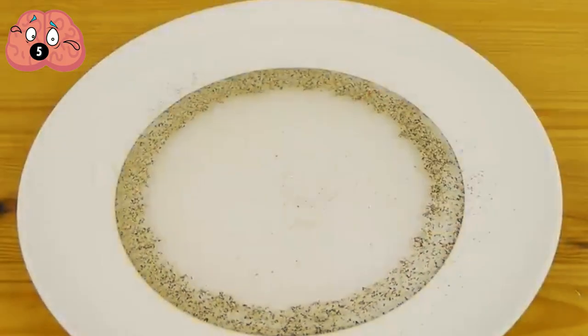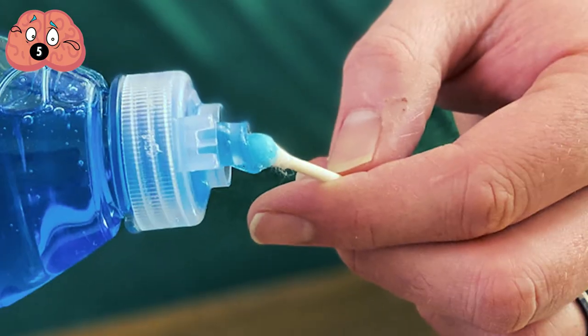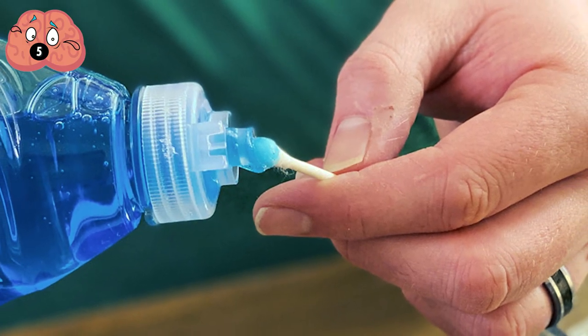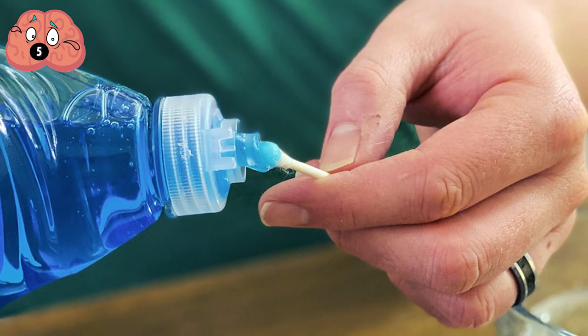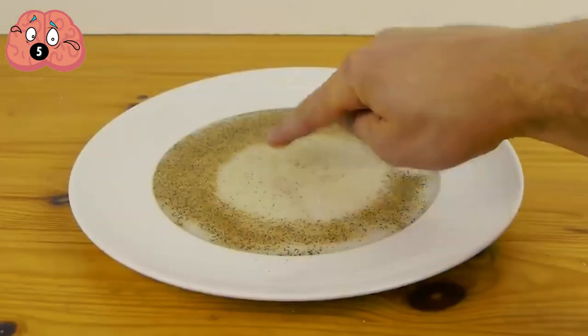What's the secret behind your secret weapon? Well, water is repelled by the detergent molecules, causing the water molecules to spread out almost instantly. This movement is best shown by the ground pepper, proving the science behind it.